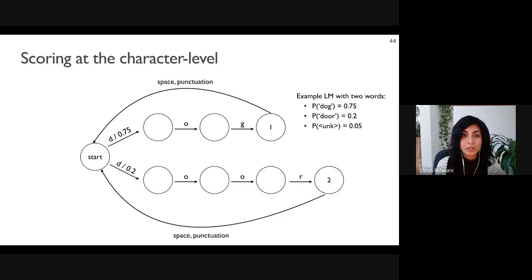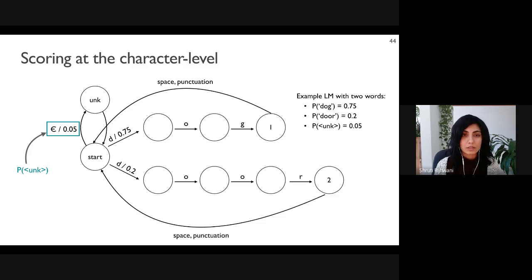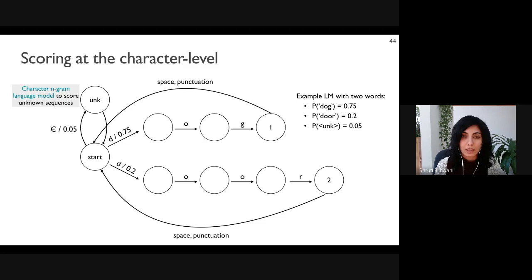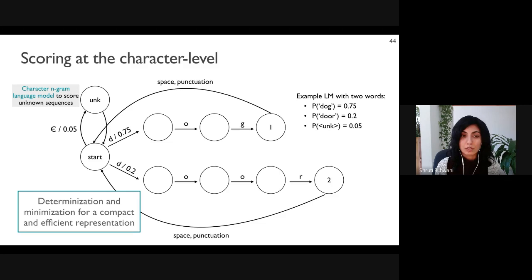Since we're in a low-resource setting, the language model likely has low coverage, so we need to score words that are unknown. We add an unknown word state to the WFSA with an epsilon transition to enter it — the penalty to enter the unknown word state is the smoothed unknown word probability from the word frequency language model. The unknown state can accept any sequence of characters, scored using a character n-gram language model also learned from the self-training predictions. We apply standard algorithms for determinization and minimization, leading to an efficient and compact representation.